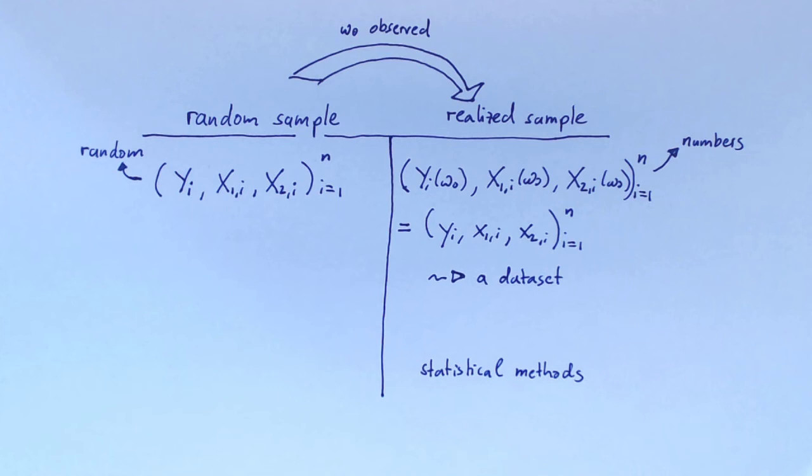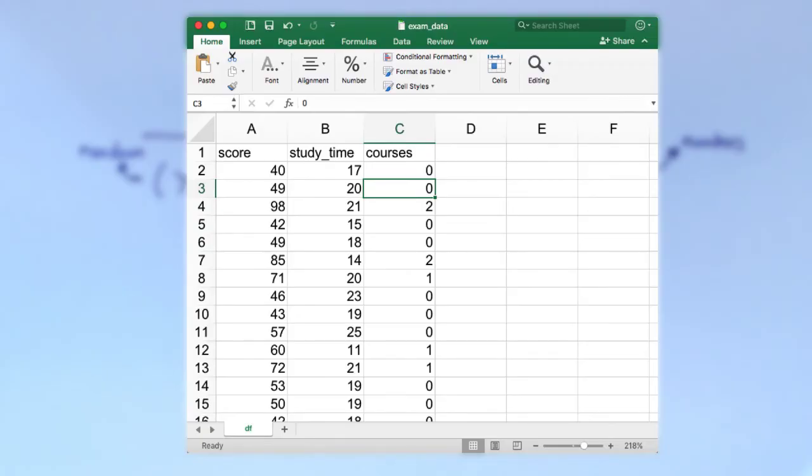Statistical methods are rules for processing numbers in a data set. In a computer, we can represent a data set, for example, in an Excel file. Here, I have opened an Excel spreadsheet with student data. Every row in the spreadsheet represents one observation. Every column represents one observed variable. The first observed student has achieved 40 points on the exam, has studied for 17 hours, and has taken no previous statistics courses.